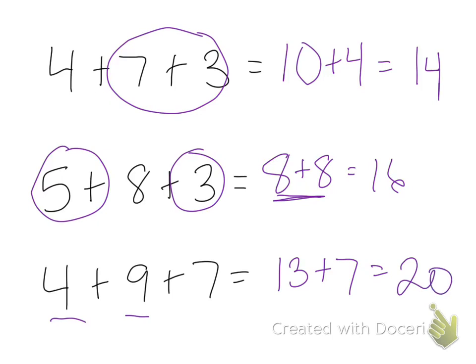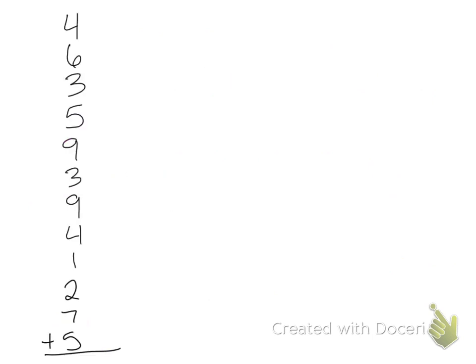So there's lots of different strategies we can use. The way we found the answer was a different strategy. So here I've got all these numbers I want to add together. I've got four plus six plus three plus five plus nine plus three plus nine plus four plus one plus two plus seven plus five.